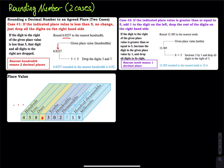Hundredths means two decimal places — the second digit on the right hand side of the decimal point. When rounding, look at the next digit on the right. The next digit is 3. Since 3 is less than 5, you do not add anything. So 6.9237 rounded to the nearest hundredth, or two decimal places, is approximately equal to 6.92.